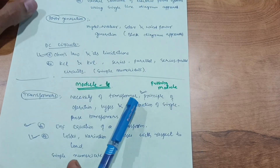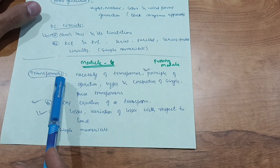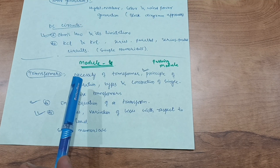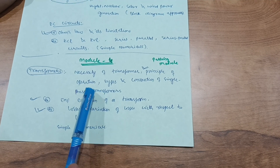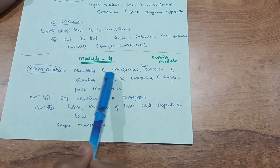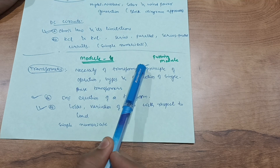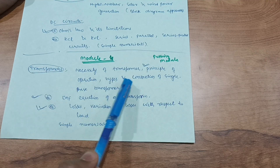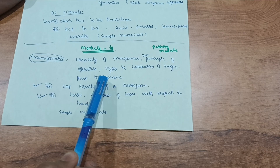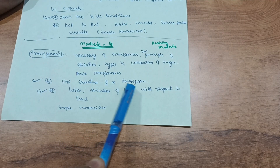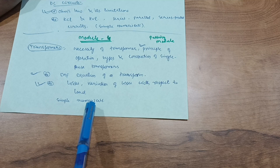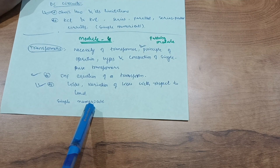Module 4 is also a passing module, where you have to focus on transformers. There is a lot of syllabus in this subject, so I have taken some important questions from these modules. Cover the necessity of a transformer, then the principle of operation — the working principle of the transformer — and types and construction of single-phase transformers. Also cover the EMF equation of a transformer and losses and variation of losses with respect to load.